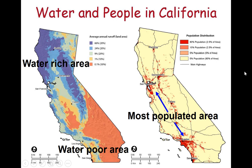We need to understand the population that needs the water and the availability of water in the state. On the right side of the map we can see the population distribution for the state. The cities of San Francisco, Los Angeles, and San Diego contain most of the population, with the remaining population in Sacramento, Fresno, and some coastal cities.